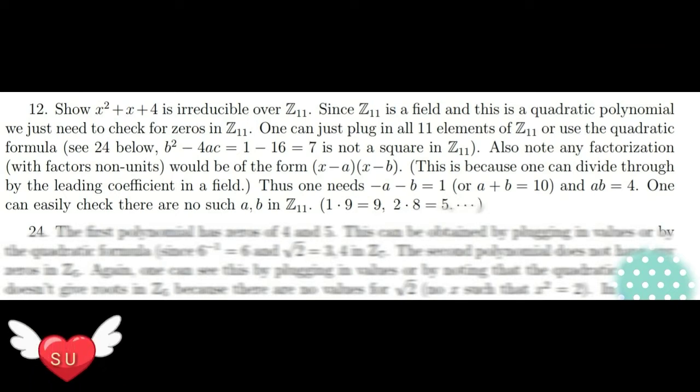So, we know the quadratic formula. Check with zero. So, what do we do? There are just 11 elements of Z₁₁.